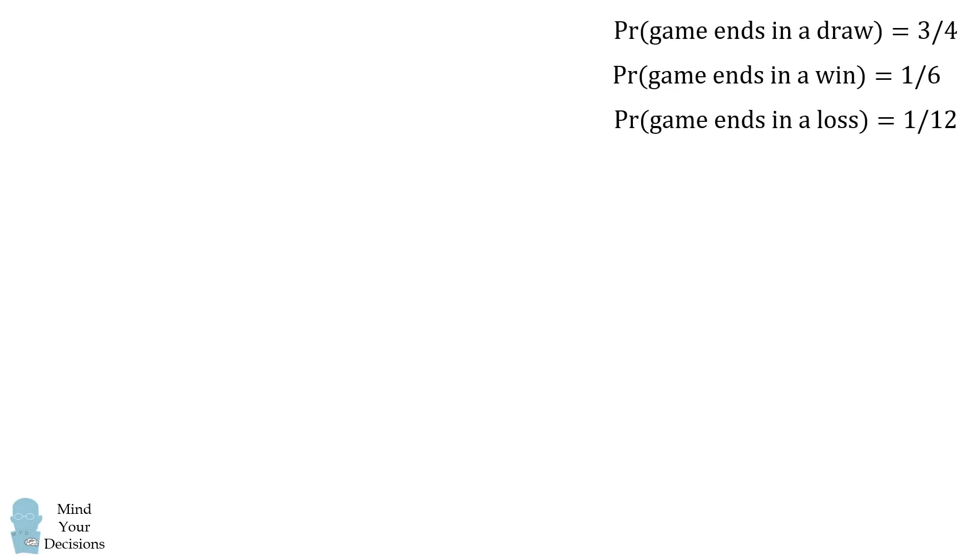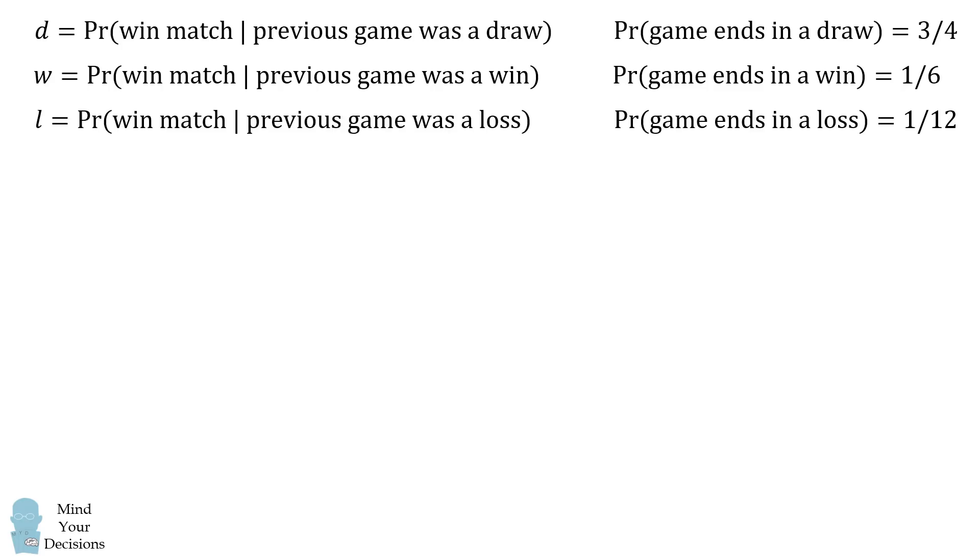Now, how can we solve for the chance that you win this entire chess match? We'll set up three different variables. Let's write D to equal the probability you eventually win the match given that the previous game was a draw. We'll write W to equal the probability you ultimately will win the match given the previous game was a win. And we'll write L to equal the probability you ultimately win the match given the previous game was a loss.